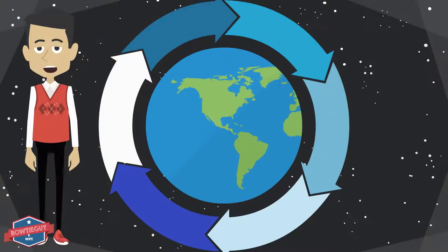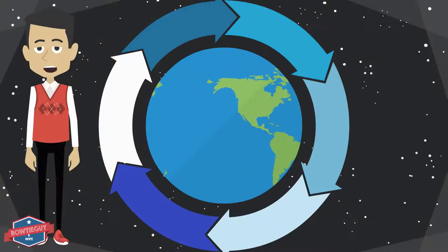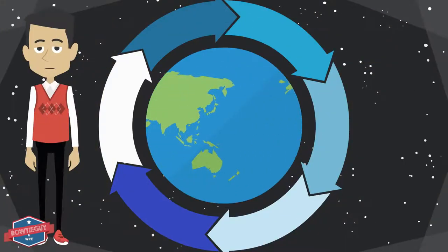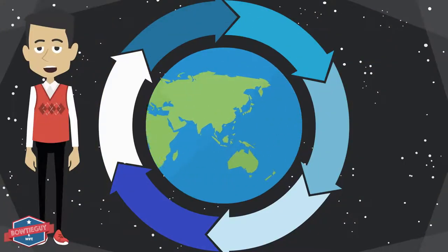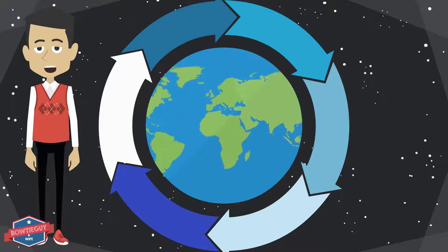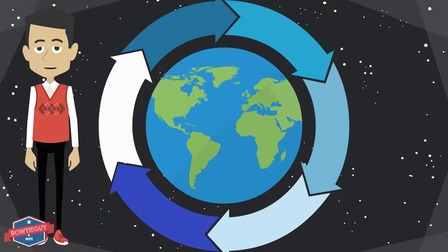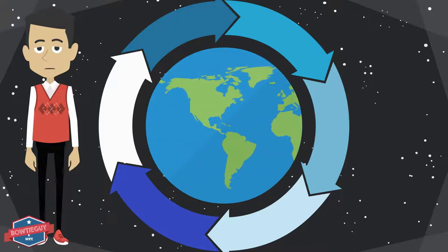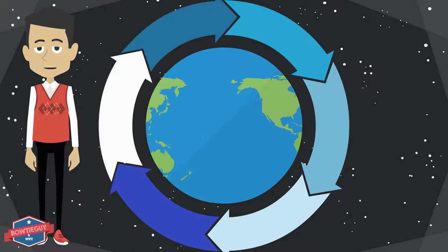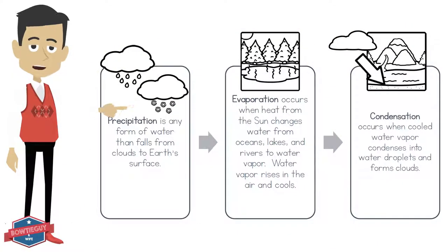We can all speculate as to how we think that water arrived on Earth, but no one really knows. All we do know is that water moves in a continuous cycle on Earth, and it has for millions and millions of years. To understand the water cycle, we need to understand these three terms.